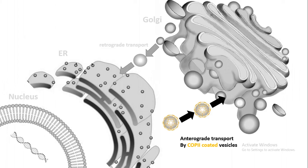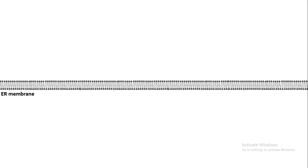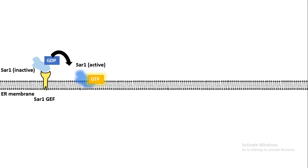From the ER to the Golgi, which is anterograde transport, it is mediated by COP2-coated vesicles. In the ER membrane there are specific GEF proteins — GTP exchange factor proteins. One such protein is SAR1-GEF, which activates SAR1-GDP into SAR1-GTP. In its GTP-bound form, SAR1 is activated. SAR1 is a monomeric G protein and it plays an important role in coat assembly.